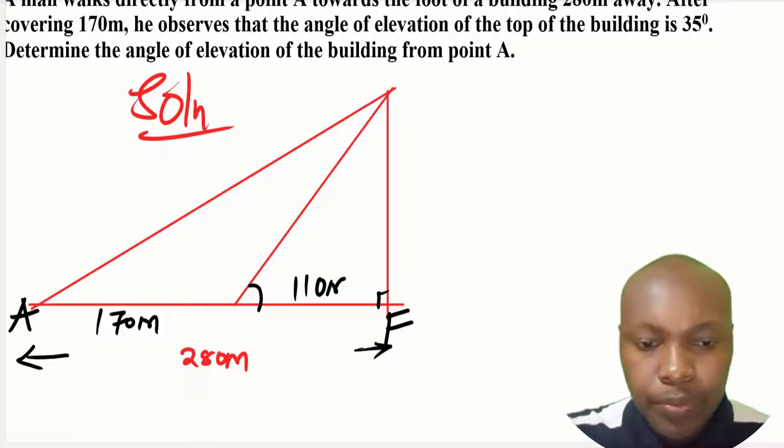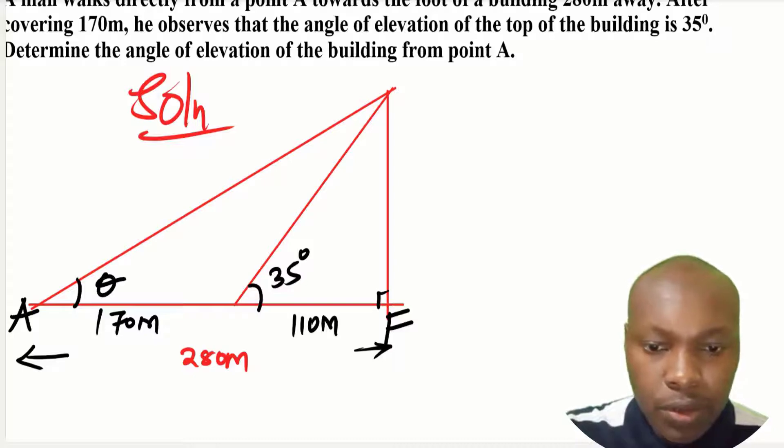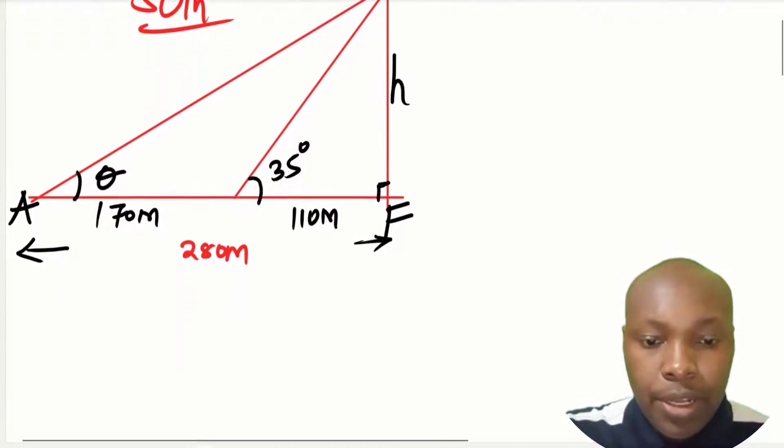Then let us indicate that is 110 meters. Since that is 35 degrees, the angle of elevation is 35 from that point. Then the distance from A to the foot of the building is 280, so that is 170 plus 110. Then the height of the building, I call that top of the building as point C. Now that is the diagram indicating these points and also the measurements.